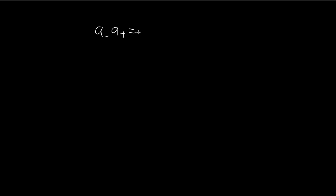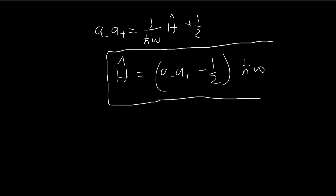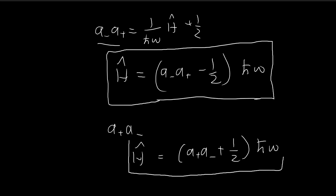An alternative way to express this result is a slight rearrangement of terms: we can express the Hamiltonian operator as ℏω times (A minus A plus minus one half), and this is the expression we're going to use later on. Also keep in mind that everything we've done for A minus A plus, you can do the exact same thing for A plus A minus. The procedure is basically the same with a slight change in positive and minus signs. Going through the algebra, you arrive at a similar result, and these two results are what we'll use in the following sections.